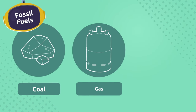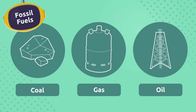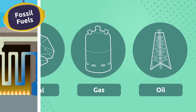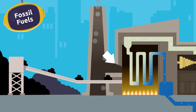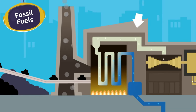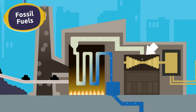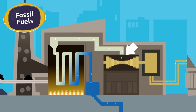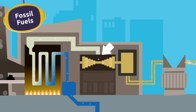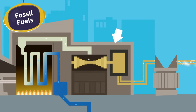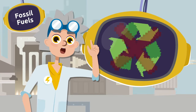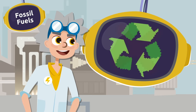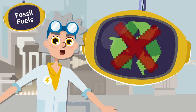Fossil fuels such as coal, gas, and oil are natural resources found beneath the Earth's surface. We burn these fossil fuels at power plants to boil large amounts of water, which produces steam powerful enough to turn a large turbine — basically a big egg beater. When the turbines turn, they activate a generator that produces electricity. But we have to be careful, because producing electricity with fossil fuels is harmful to the environment.